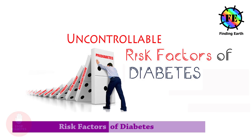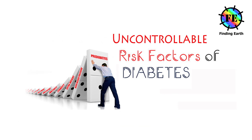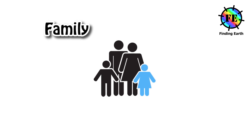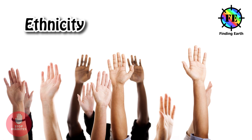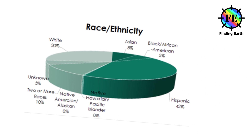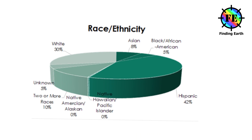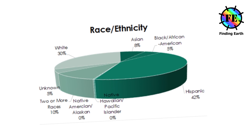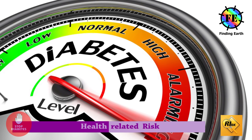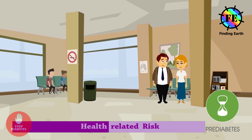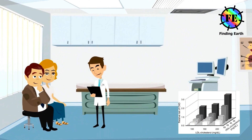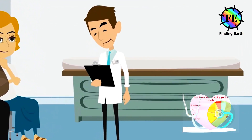Frequent gum disease or infection, sexual dysfunction among men over 50 years of age, and numbness or tingling especially in your feet and hands. Risk factors you can't control include age 45 or older, family history — a parent, sister, or brother with diabetes — and ethnicity: African-American, Alaska Native, Native American, Asian American, Hispanic, or Pacific Islander.